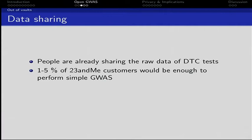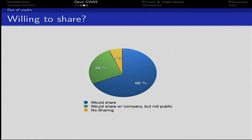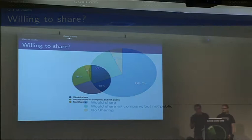About 1 to 5% of all customers of 23andMe would be able to share their data and would be okay with that. There's one project going on — the Personal Genome Project — which is open data but closed participation, so not everybody can participate even if they wanted to. We made a small questionnaire and asked 200 people: 68% would share their data, 26% would share their data but only with companies, and only 6% would not share their data at all.